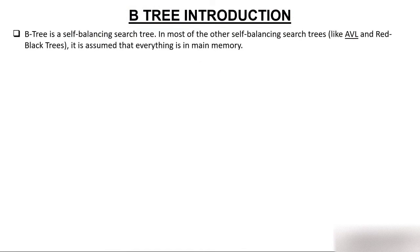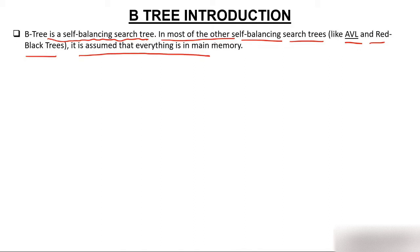B-tree is a self-balancing tree. We do have other self-balancing trees — such as AVL tree, which is also a balancing tree, and Red-Black tree. For most of those other trees, it is assumed that everything is maintained in main memory.